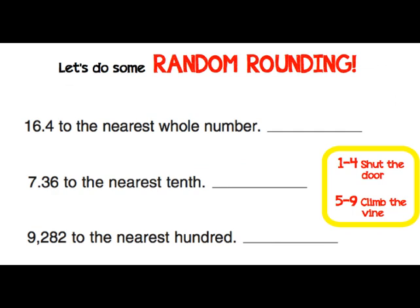We're going to do some random rounding. These questions are going to have us round lots of different things to different place values, so we're just going to keep using our rule and underlining where they want us to round. 16.4 to the nearest whole number — all that means is we don't want a decimal. Looking at this 4, it fits in the rule 1 through 4, shut the door. So we are going to leave this as 16.